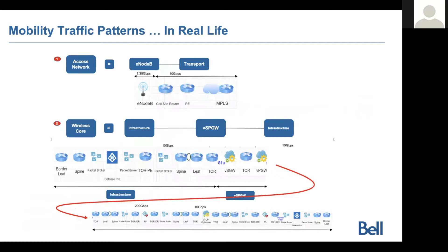If you look at a typical network traffic pattern, we have a fabric and all the hops it needs to traverse to create a chain — it is quite complex. This slide shows a high-level explanation of how we actually need to traverse all those hops to create a complex chain, for example a GI LAN service.